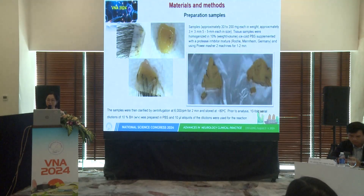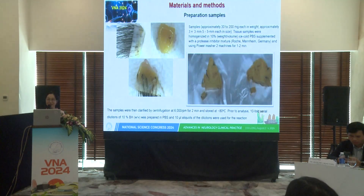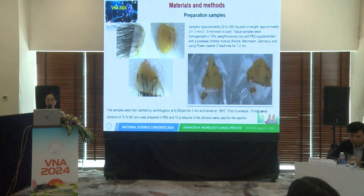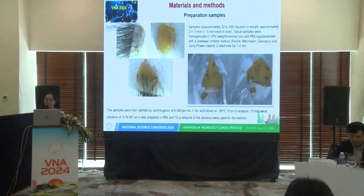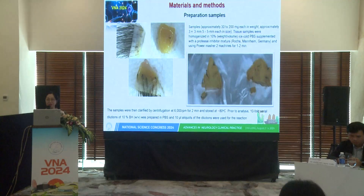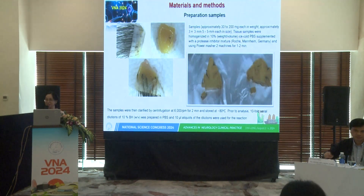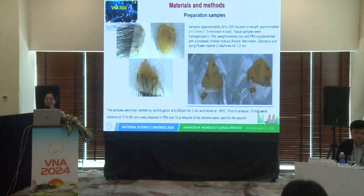Regarding sample preparation — focusing on the scalp and brain — each sample was approximately 30 to 200 mg in weight, approximately 3×3 mm to 5×5 mm in size. Samples were homogenized with 10% PBS using a power homogenizer for one to two minutes, then clarified by centrifugation at 6,000 rpm for two minutes, and stored at minus 80 degrees Celsius.